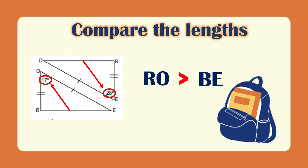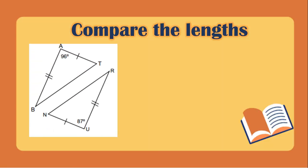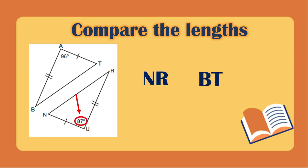Next, let's have NR. Looking at NR, the opposite angle is 87 degrees. And BT — the opposite of BT is 96 degrees. Which means NR is less than BT.